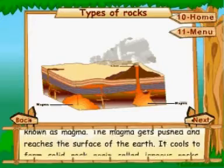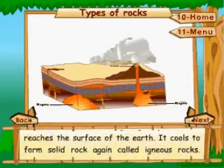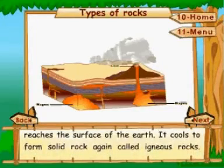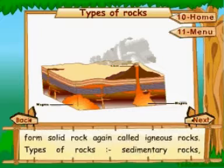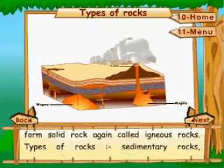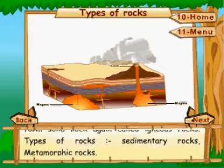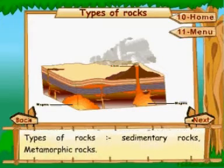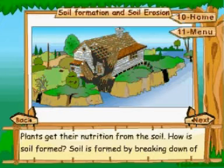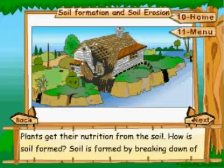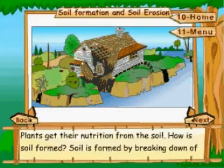The magma cools to form solid rock again, called igneous rocks. The other types of rocks are sedimentary rocks and metamorphic rocks. Plants get their nutrition from the soil.